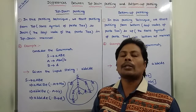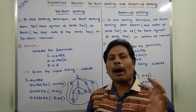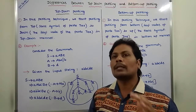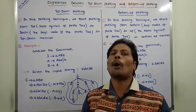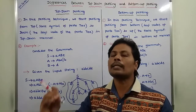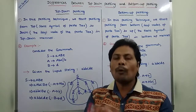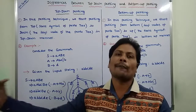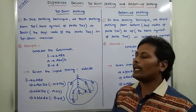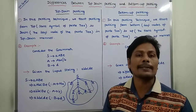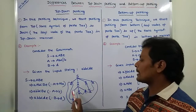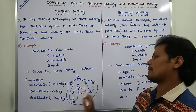The first point: in top-down parsing, we start parsing from top to down in a top-down manner, where top is nothing but the start symbol of the parse tree, and down is nothing but the leaf nodes of the parse tree.